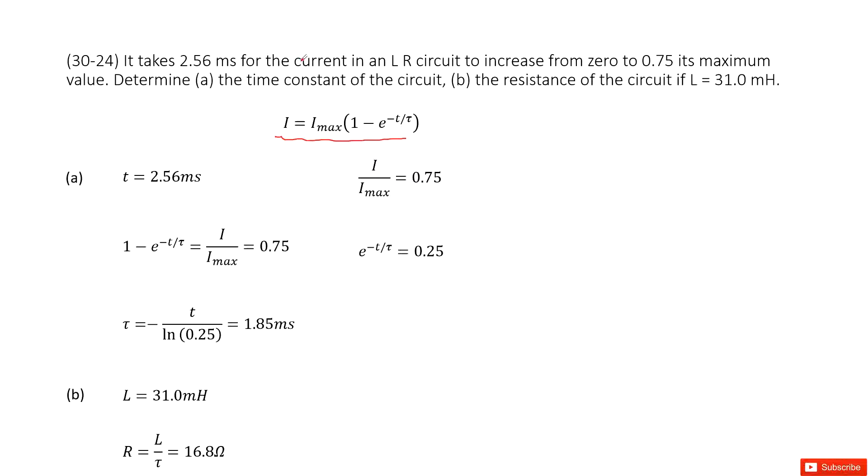First of all, we need to know the time it takes, 2.56 milliseconds, for the current to increase from zero to 0.75 of its maximum value.